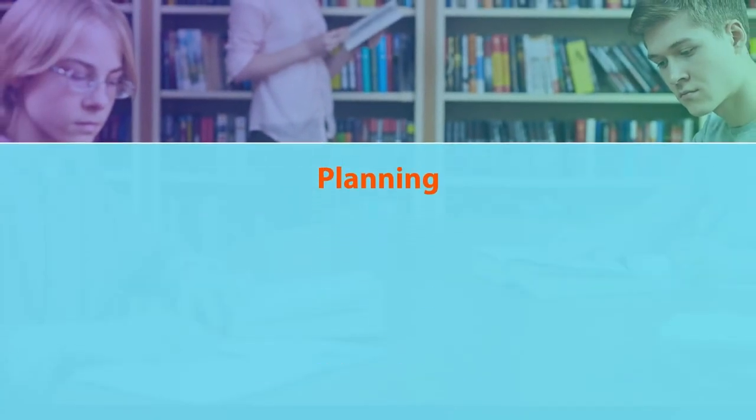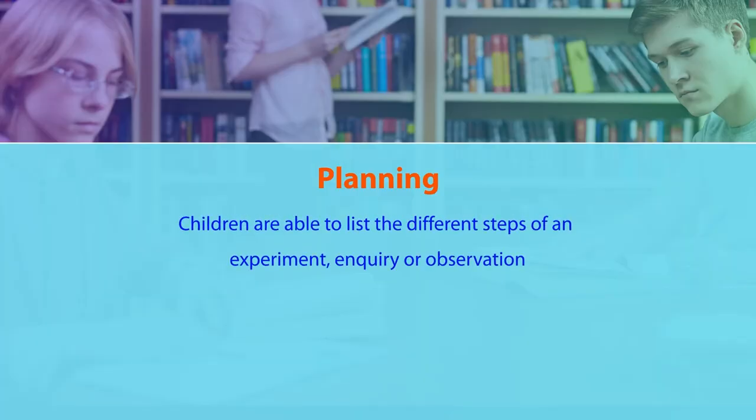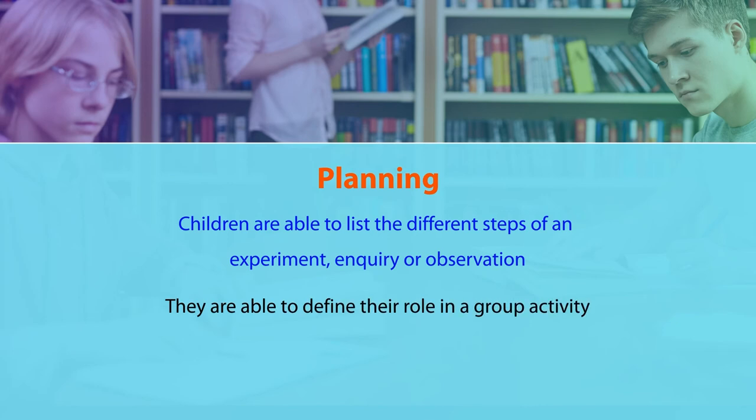Similarly, for planning — in classes like 6th, 9th, or 10th, you ask children to organize certain activities, to plan an experiment, an inquiry, or certain observations. If children are able to list the different steps of an experiment or observation, and if they are able to define their role in a group activity — what I will do, what others will do — it means they are good at planning. These are the assessment indicators for the planning phase.